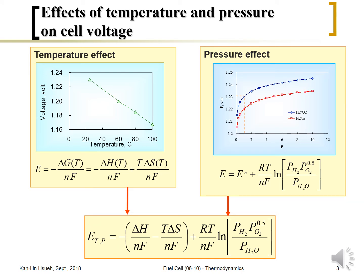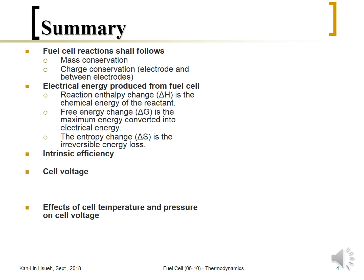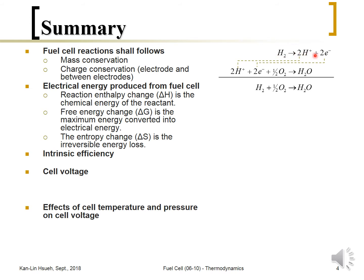From thermodynamics, we need to make a balance for the electrochemical reactions on the anode side and the cathode side. First, we make a mass conservation balance before and after the reactor. Then we make a charge balance — the charge before the reaction and after the reaction should be conserved. The electrons released from the anode should be accepted by the cathode, and they should be equal.